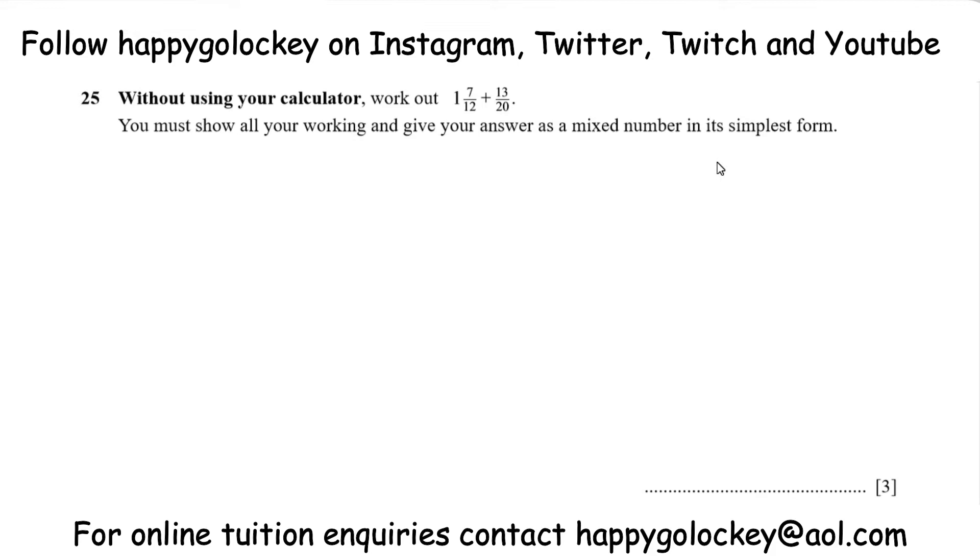Without using your calculator, work out 1 and 7 twelfths plus 13 twentieths. You must show all your working and give your answer as a mixed number in its simplest form. Three mark question.